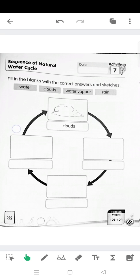So after clouds, clouds become heavy and fall as rain. So write here rain and then sketch. Rain water will flow back into rivers and seas. So this is water.